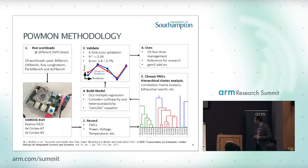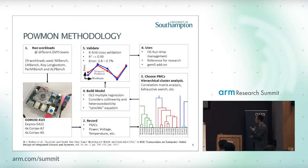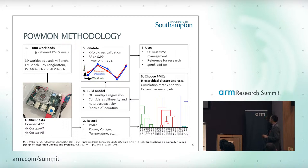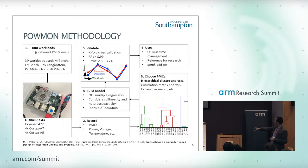The power modeling methodology that we came up with is titled PowMon. You start by running a set of workloads on your system — on a practical embedded device. Lots of the work we've done has been on one of the Odroid boards, which contains the octa-core big.LITTLE device. From that, we record a range of statistics: performance counters, power sensors, voltage sensors, temperature sensors, and so on. We take all of that data, choose which statistics to build our model from, build and validate the model, and then have a runtime model to estimate power consumption.